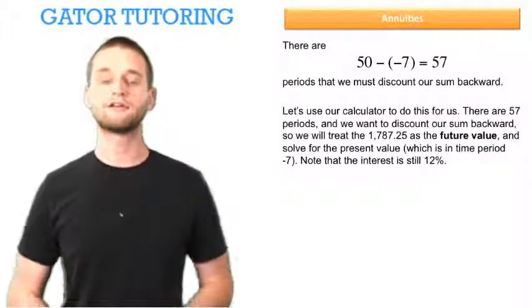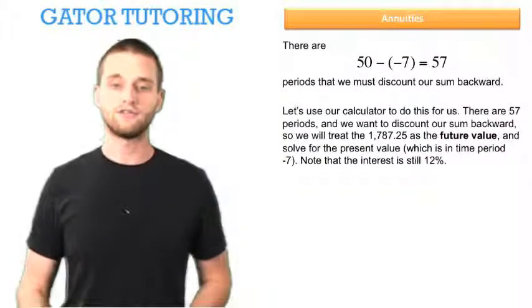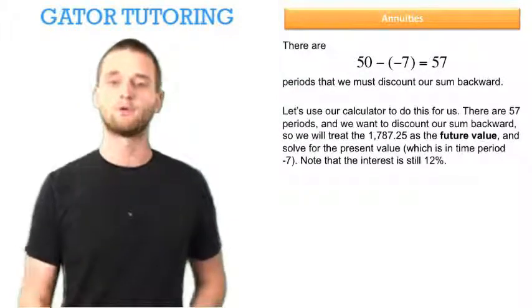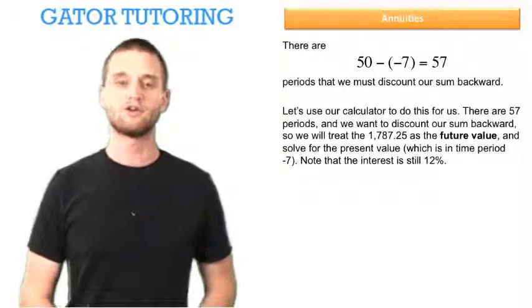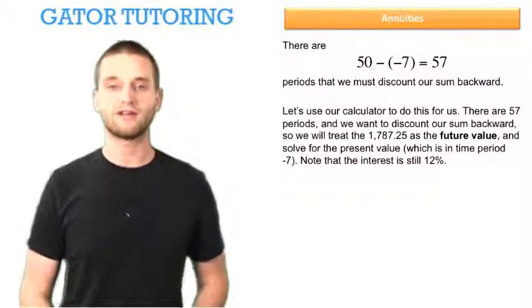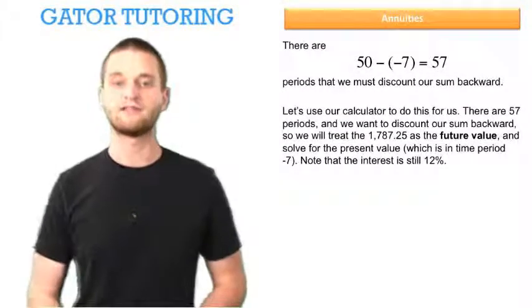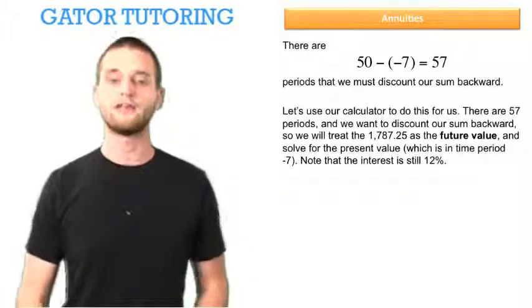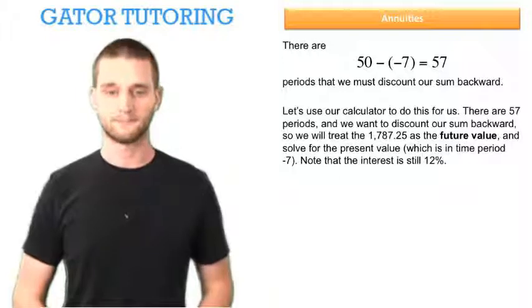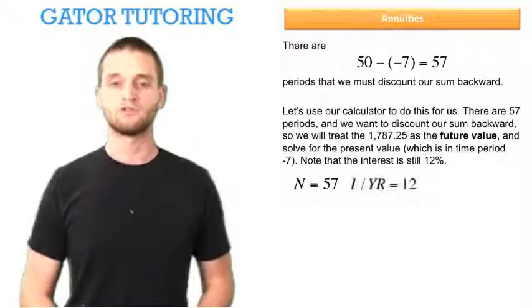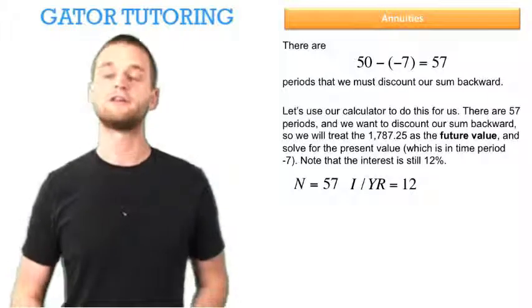So we can use our calculator to do this. There are 57 periods and we want to discount our sum backward. So we will treat the $1787.25 as the future value and solve for the present value, which is in time period negative 7. Note that the interest is still 12%. So N is 57 periods, interest per period is 12%.